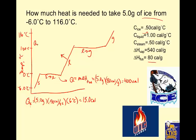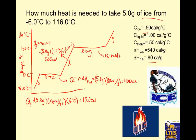Once it's all liquid, Q = mcΔT for the liquid: 5.0 g × 1.0 cal/(g·°C) × 100°C = 500 calories. Then it boils — that's a flat line phase change, so Q = m·ΔH_vaporization: 5 g × 540 cal/g = 2,700 calories.